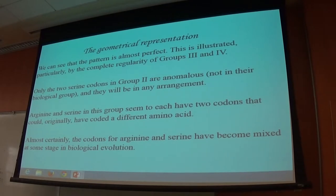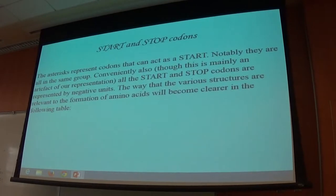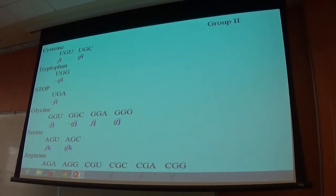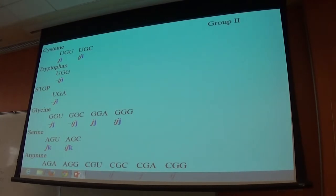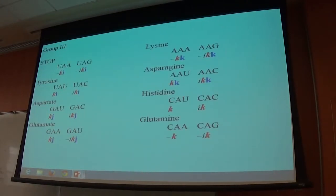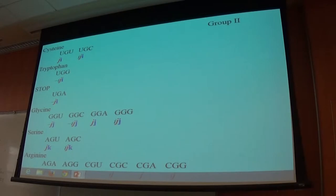If we go back to group two — arginine has six codons and serine has two. We think the first two of arginine, and these two for serine, were really coding for something else, a different amino acid that was dropped out of the process somehow. A typical way these things change biologically — because biology will always be somewhat less perfect than physics, it's a bit more complex in structure, and there's more variation likely to happen.